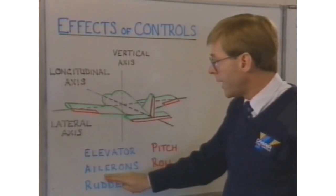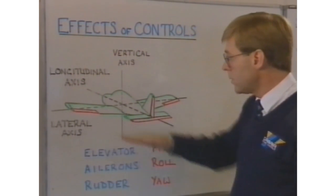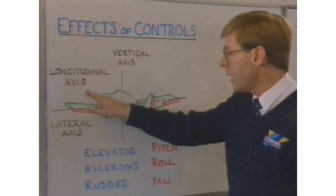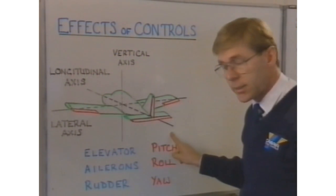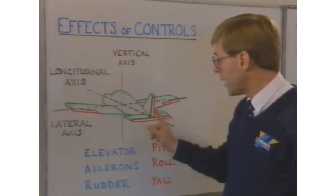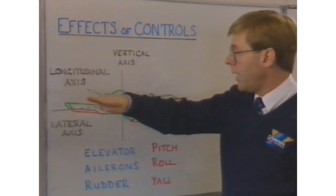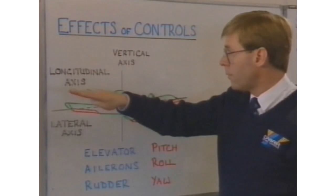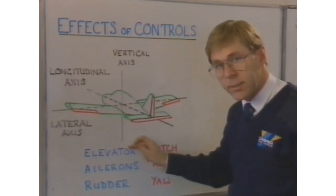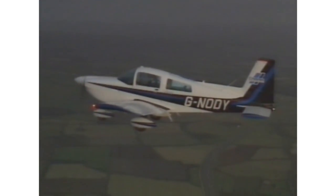Movement of the ailerons will cause the aircraft to roll wing left or wing right about the aircraft's longitudinal axis. Movement of the rudder will cause the aircraft to yaw left and right about the aircraft's vertical axis.